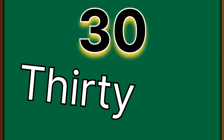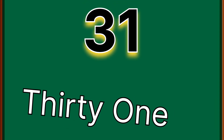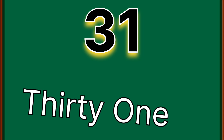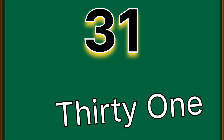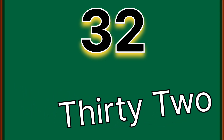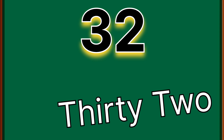Thirty — three, zero — 30. Repeat: three, zero — thirty. Thirty-one — three, one — 31. Repeat: three, one — thirty-one. Thirty-two — three, two — 32. Repeat: three, two — thirty-two.